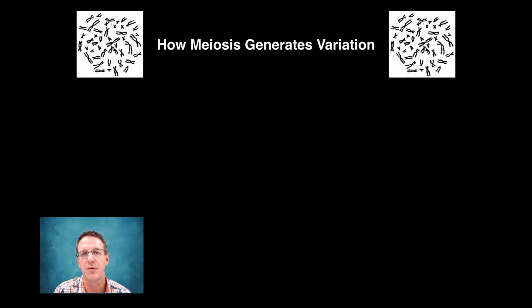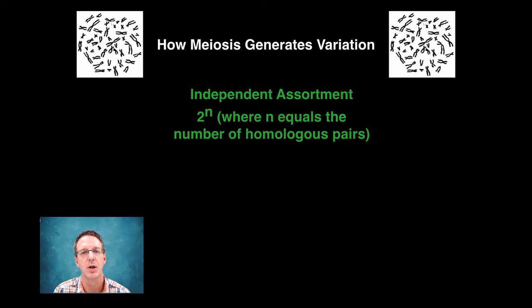Now, in eukaryotes, variation can also be generated by shuffling the genetic deck through the process of meiosis. Every time a cell undergoes meiosis to form a sperm or an egg, the process of independent assortment will generate over 8 million different possible gametes, at least that is in humans with 23 chromosomes.